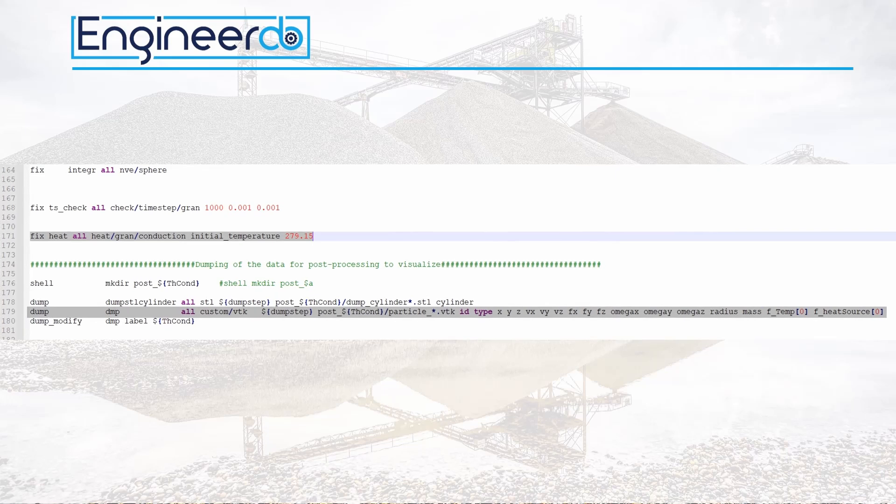In line 171 finally the heat simulation is activated. The initial temperature of the particles is set to 279.15 Kelvin which is equal to 6 degrees Celsius and temperature I got out of my backyard.